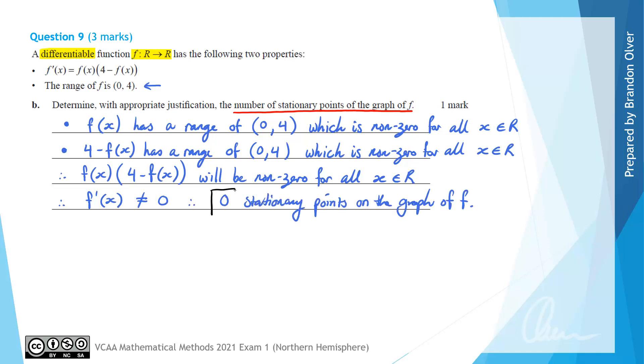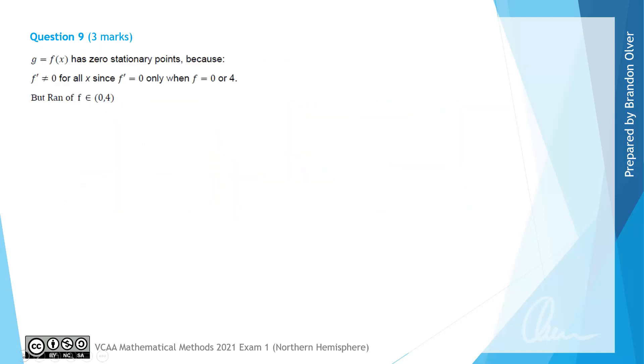So the answer is 0, but of course, the question said we needed appropriate justification, which is why I've dot-pointed out my reasoning above. Now, the examiner's report goes about it a slightly different way, and it just says f'(x) is never equal to 0, since f'(x) equals 0 only when the function f is 0 or 4, and the range of f is 0 to 4 exclusive, so f'(x) is never equal to 0, which gives 0 stationary points. So a similar approach, but slightly different.